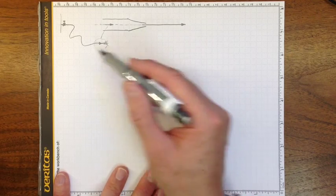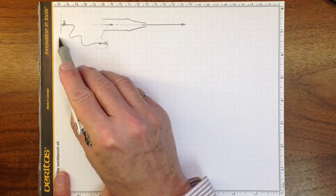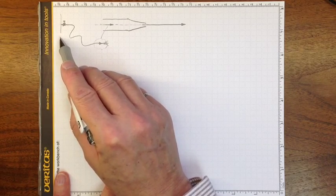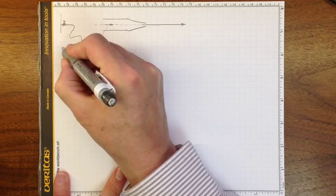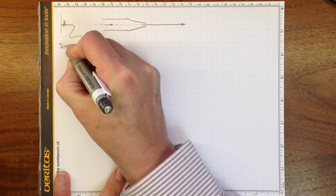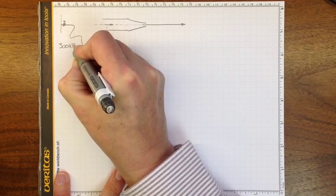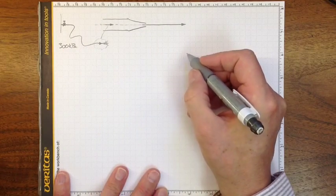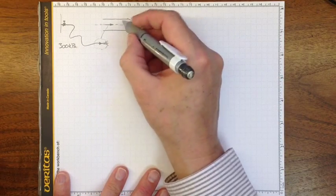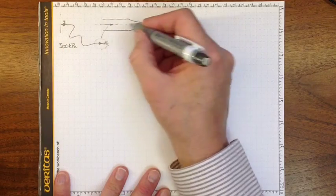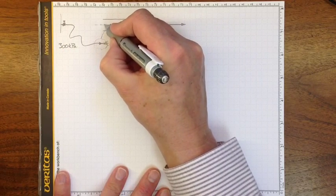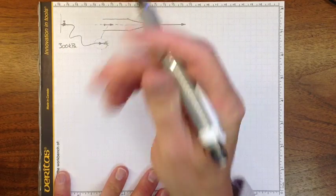So let's assume that our household pressure is, oh, let's say 300 kilopascals. And our pressure, that's our supply pressure, and it's also the pressure right here at location one.